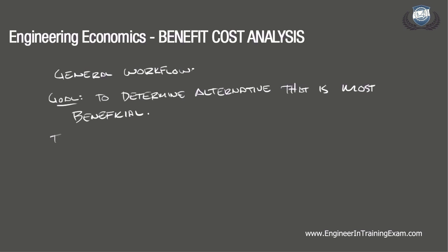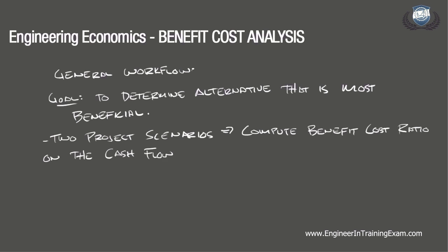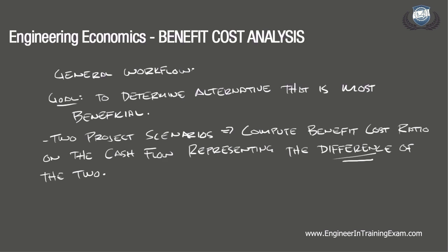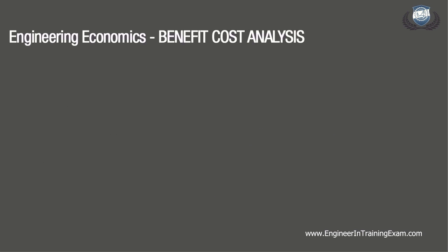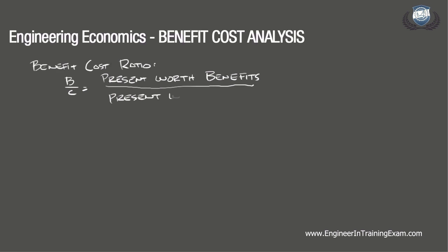A typical problem will illustrate two project scenarios that take place over the same duration in time. We will compute the benefit cost ratio on the cash flow representing the differences of these two alternatives. This difference in cash flow can be established by subtracting the lower initial cost alternative cash flows from the higher initial cost cash flows. To determine the benefit cost ratio, the following formula is used: B over C, which is benefit cost, is equal to the present worth of benefits divided by the present worth of costs, which is also equal to the equivalent uniform annual benefits divided by the equivalent uniform annual costs.